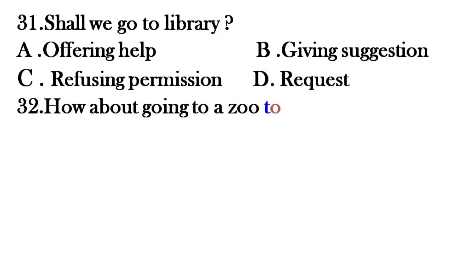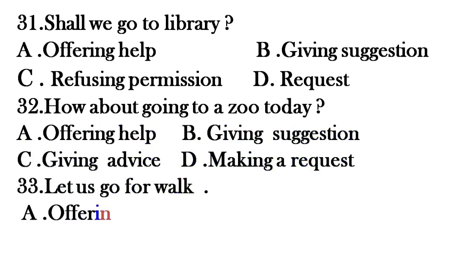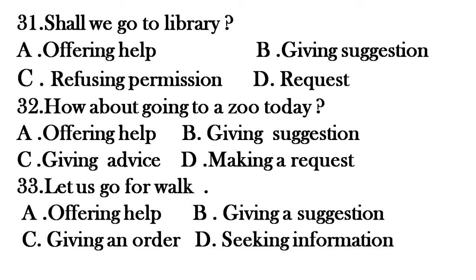Question thirty-one: 'Shall we go to the library?' Options: offering help, giving suggestion, refusing permission, request. The answer is request. Question thirty-two: 'How about going to the zoo today?' Options: offering help, giving suggestion, giving advice, making a request. The answer is giving suggestion. Question thirty-three: 'Let us go for a walk.' Options: offering help, giving a suggestion, giving an order, seeking information. The answer is giving a suggestion.